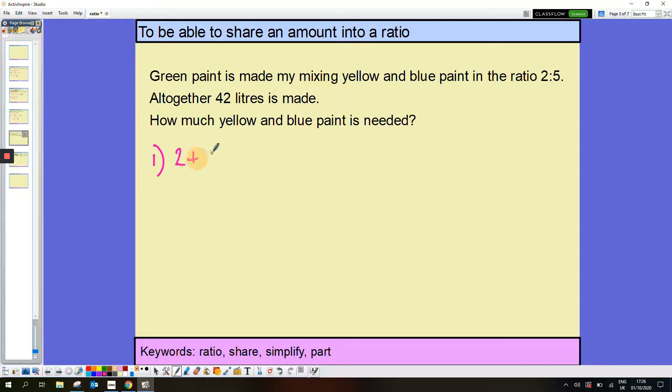And then my final step is to work out how much yellow and blue paint we need. So yellow is 2 lots of 6, so that's 12 litres. And for blue, it's 5 lots of 6, which is 30 litres. Again, nice quick check, 12 add 30 leaves me with an answer of 42.